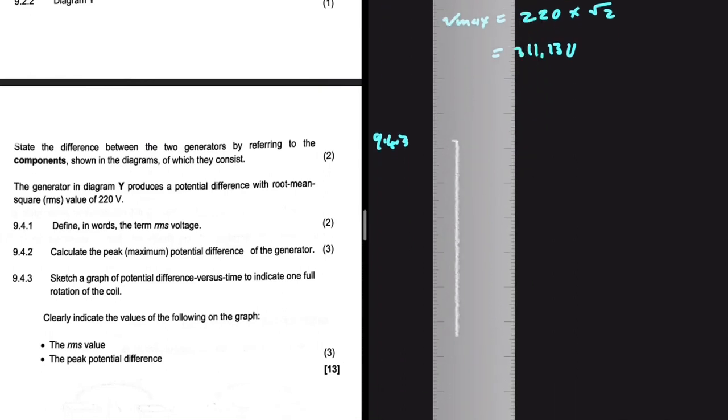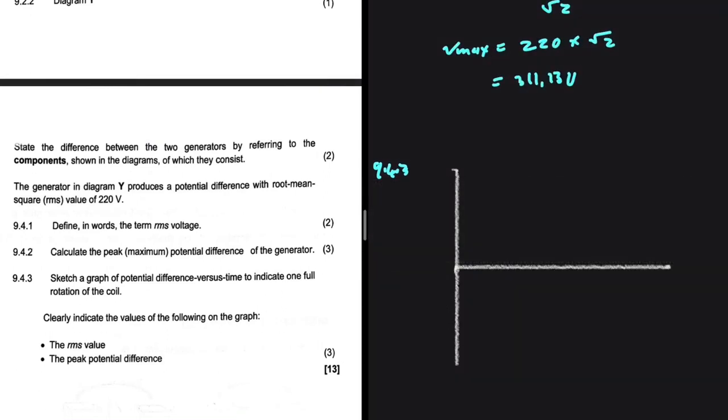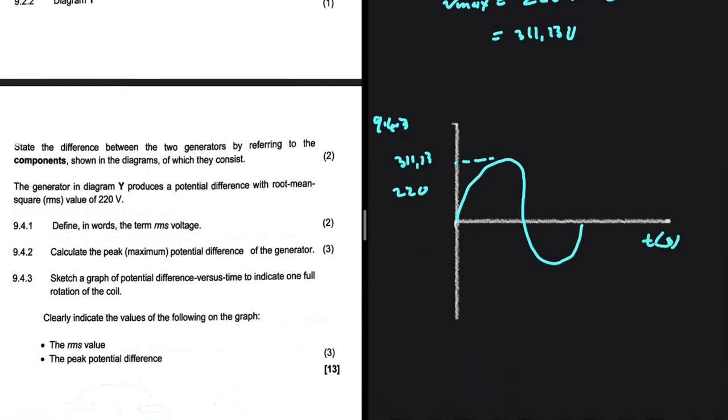In an AC generator, the current alternates, so we're going to have something like this sinusoidal wave. We're supposed to indicate V_max and V_rms. V_max will be somewhere here with a value of 311.13, and then we're going to have V_rms somewhere here with 220 volts. On the x-axis we have time in seconds, and on the y-axis we have the potential difference in volts.